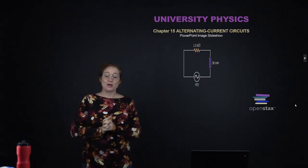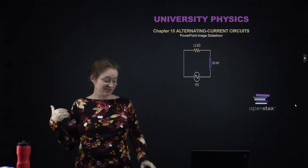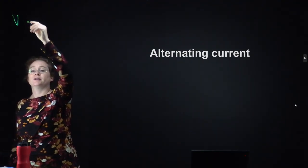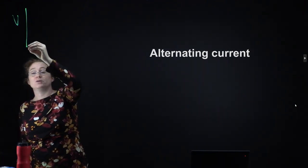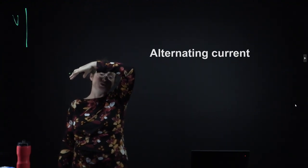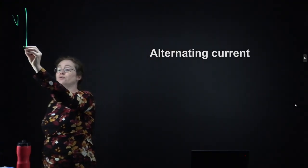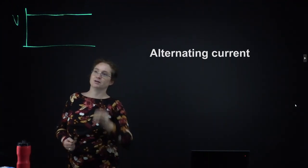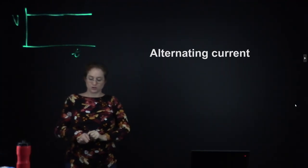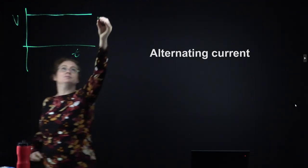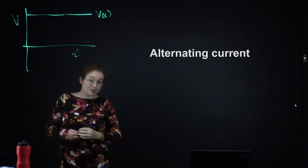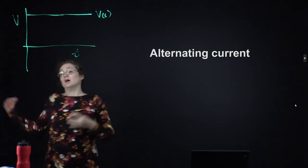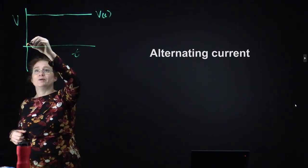We are going to talk about alternating current circuits now. Before, we've only talked about having a constant current or constant voltage, which means you have either a constant current or you are slowly building up towards some equilibrium system. When you have an alternating current circuit, instead of applying a constant current, you're going to apply an oscillating current. Usually that oscillation is chosen to be approximately sinusoidal, about zero — sinusoidal meaning following a sine function.